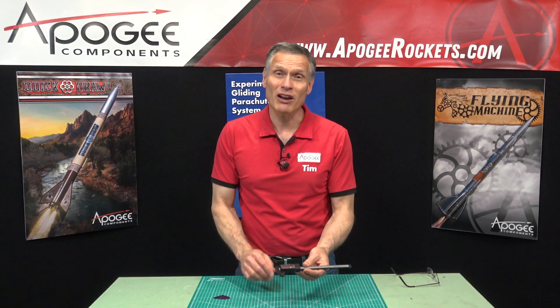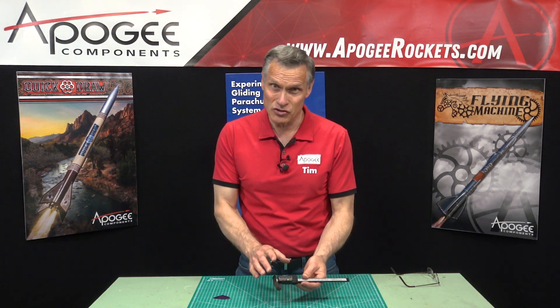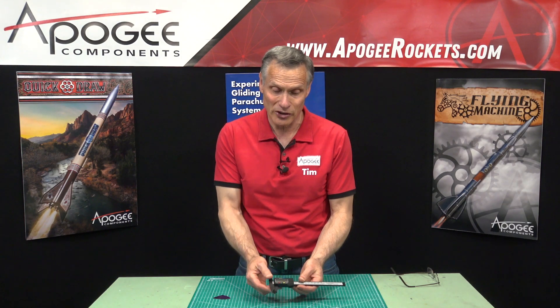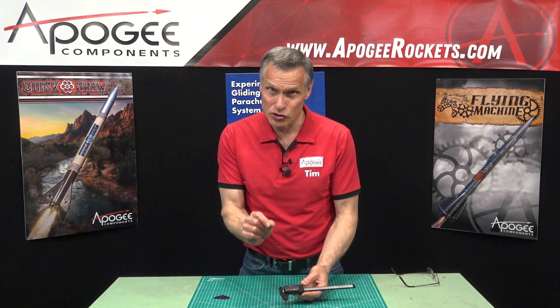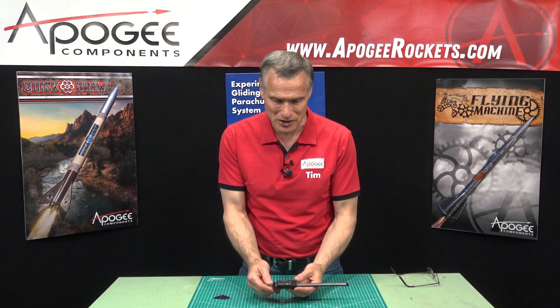Every modeler should have a simple caliper like this one. This is a digital caliper, which is used to measure thicknesses of things.